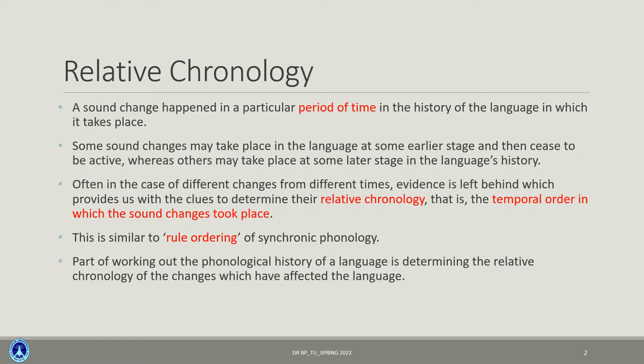First, let's learn about relative chronology briefly. By the term itself, it involves chronology — a kind of sequence. A sound change happened in a particular period of time in the history of a particular language. We are talking about the diachronic parameter of sound changes. Some sound changes may take place at an earlier stage and then cease to be active at some point, whereas other sound changes may take place at a later stage.